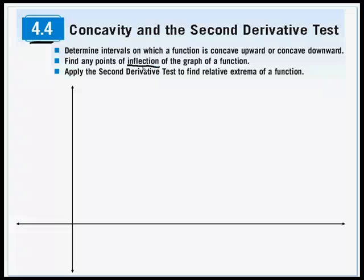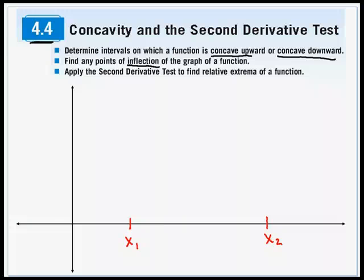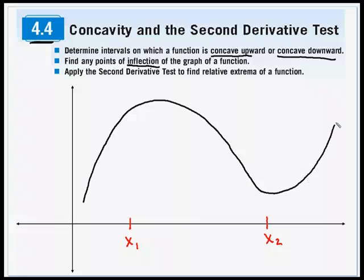A point of inflection is where a graph changes from concave up to concave down, or concave down to concave up. In earlier sections, we were finding critical numbers of our function. We would take the derivative, set it equal to zero, and we might find a couple critical numbers where we knew we had a horizontal tangent line. We might find some points which we called critical numbers, and those told us where we might be able to find mins and maxes of the graph.